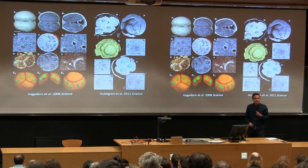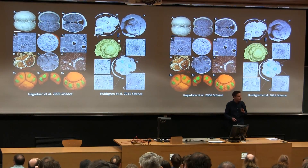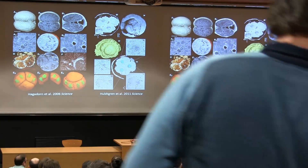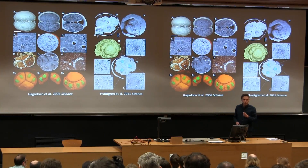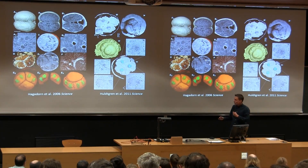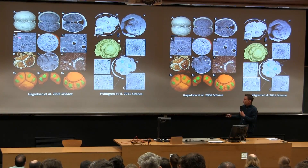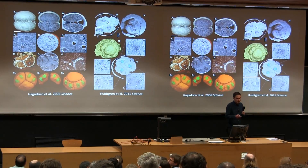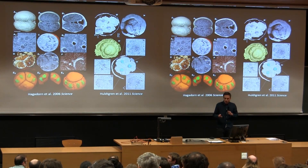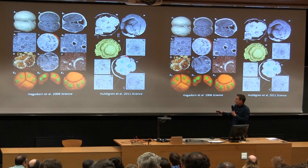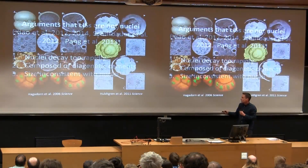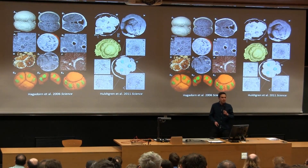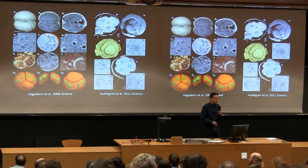Excitement also stems from the exquisite preservation of these fossils, which are preserved down to a subcellular level. These two papers describe this using tomography, showing that we have both small intracellular structures interpreted as lipid vesicles or yolk droplets, and also large intracellular structures or lisses which have been interpreted by some authors to be preserved nuclei.